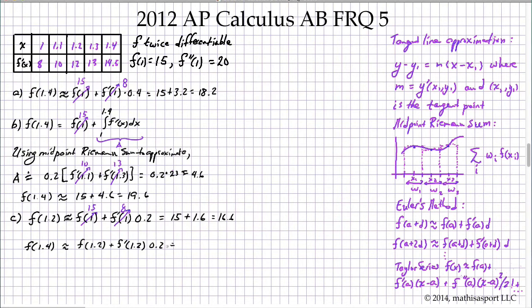So what have we got here? f of 1.2, we have to use the approximation from above, 16.6. f prime of 1.2, that we're given in the table, so we'll write that as 12. And so 12 times 0.2, let's get this together: 16.6 plus 12 times 0.2 is 2.4, and that's going to yield 19.0.